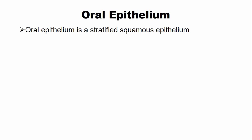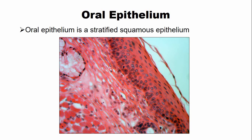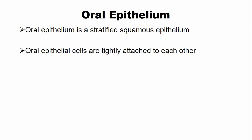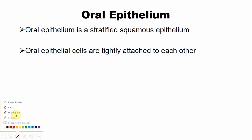The oral epithelium is a stratified squamous epithelium, and the cells of this oral epithelium are tightly attached with each other with the help of specialized junctions known as desmosomes.